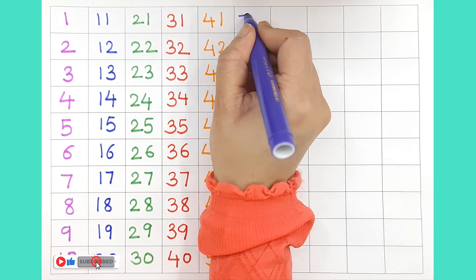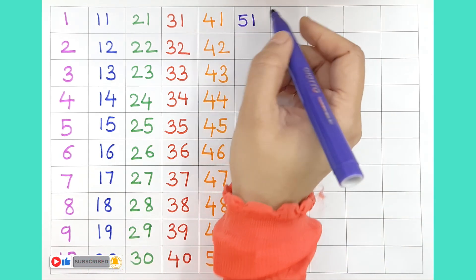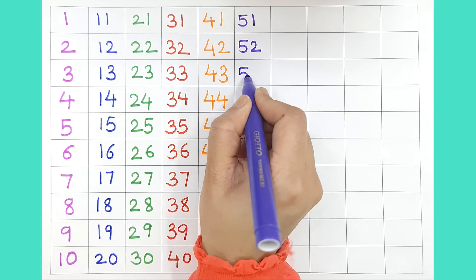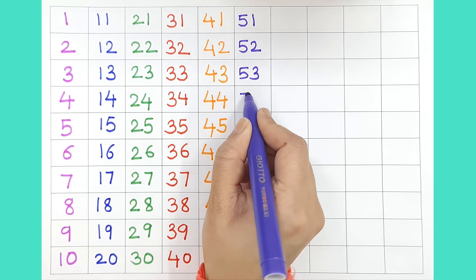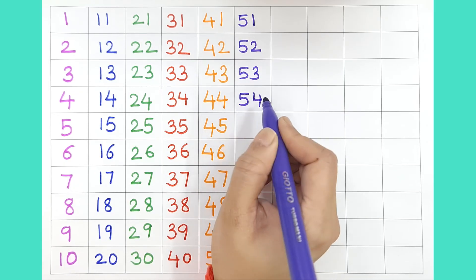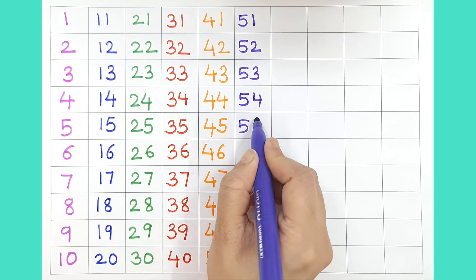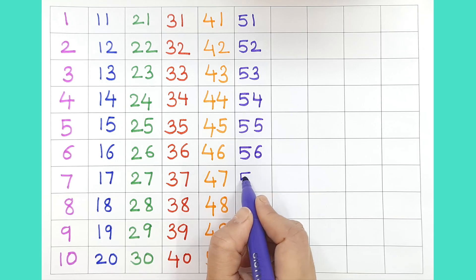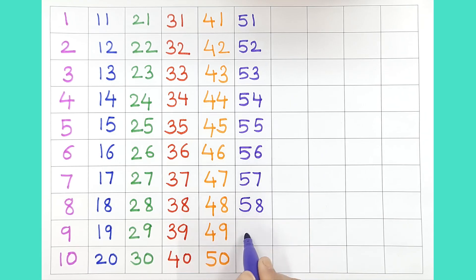Next come 51, 52, 53, 54, 55, 56, 57, 58, 59. And here 60, 60.